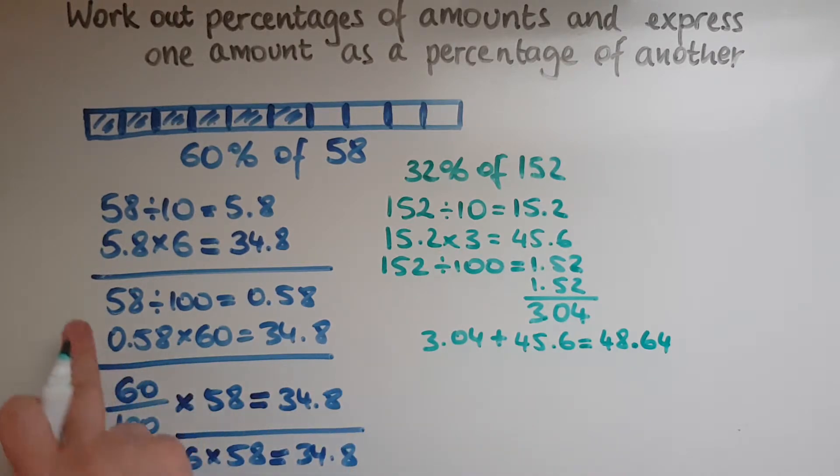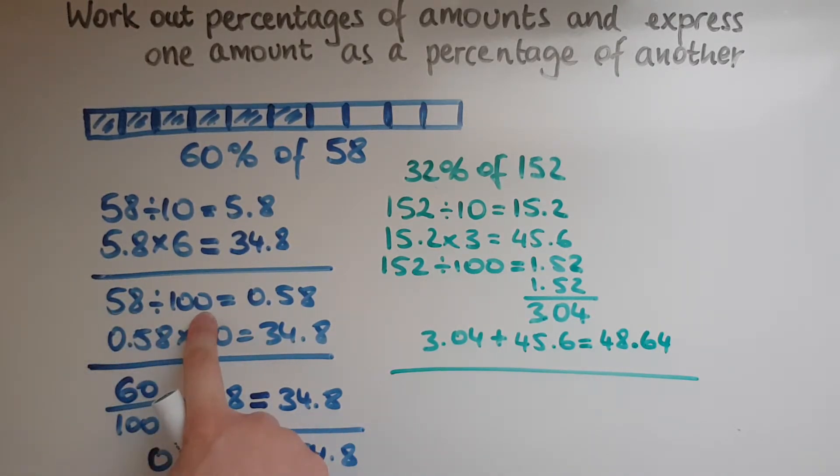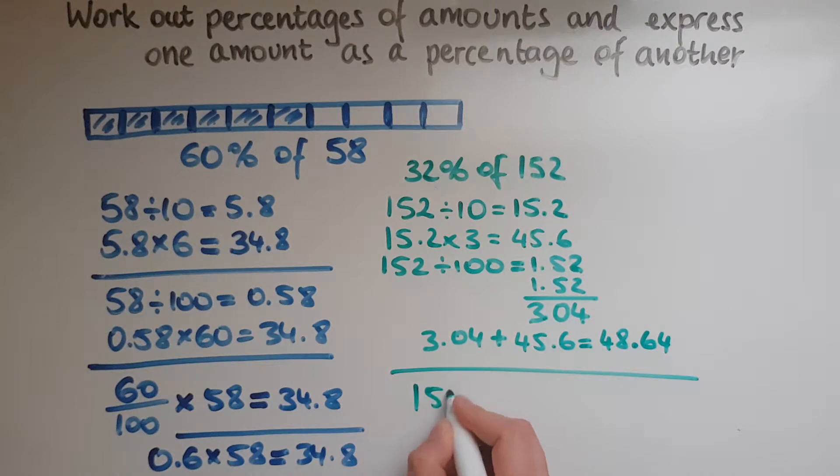Now, the other one was this, which is more like a calculator method. So we said the total, we divide by 100 and then we multiply by how many percent we want. So I would go now 152 divided by 100. So that gives me 1%, which is 1.52.